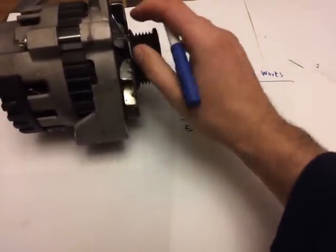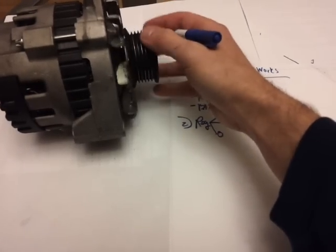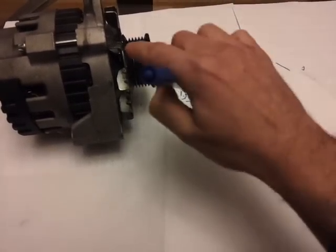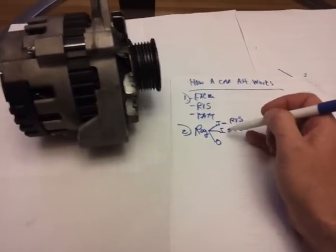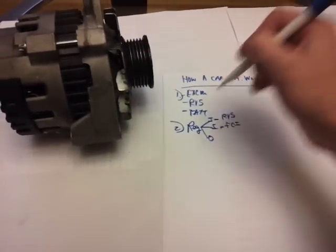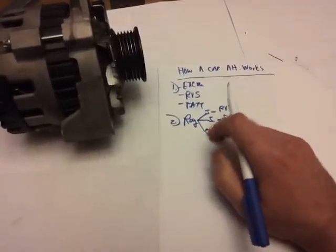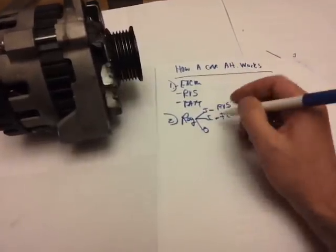Remember, at the beginning the exciter wire's job was to give this guy juice upon initial startup. Now once the car gets running and this starts turning and it makes power on its own, that's where this comes into play. It takes the output voltage, the output power that it makes, and it harnesses it and throws it back into the rotor itself, which I'll talk to in a minute.